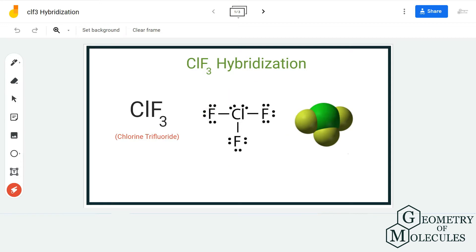This is the Lewis structure of ClF3. You can see that the chlorine atom is forming three bonds with three fluorine atoms over here, and apart from that there are two lone pairs on the central atom.